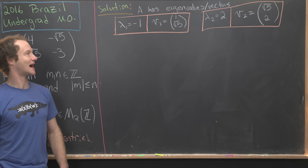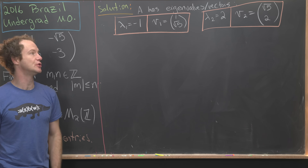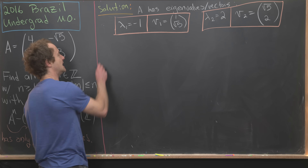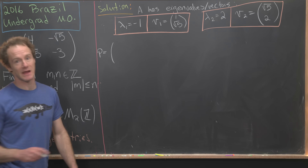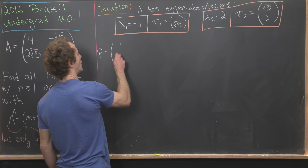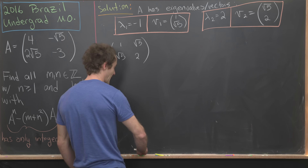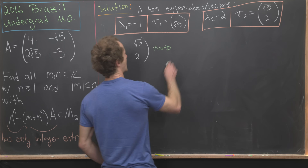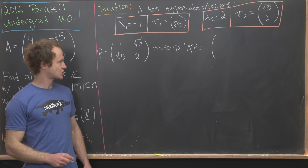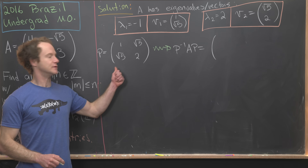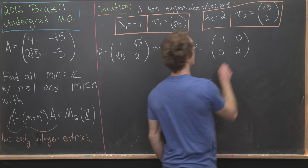We set the diagonalizing matrix P with eigenvectors as columns: P = [1, √5; √5, 2]. By linear algebra, P⁻¹AP equals the diagonal matrix D = [−1, 0; 0, 2], where diagonal entries are the corresponding eigenvalues.